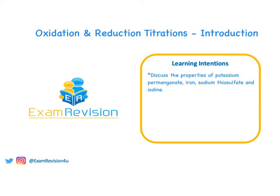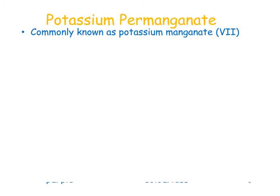In this video we're going to look at oxidation and reduction titrations and introduce the idea of them and look at the theory. Specifically we'll look at the properties of potassium permanganate, iron, sodium thiosulfate, and iodine, because they are the main chemicals involved in oxidation and reduction titrations.